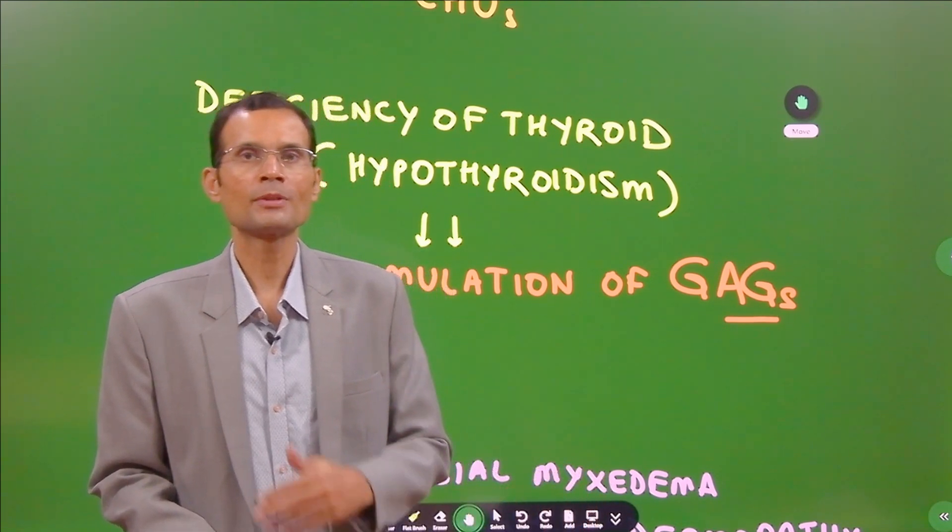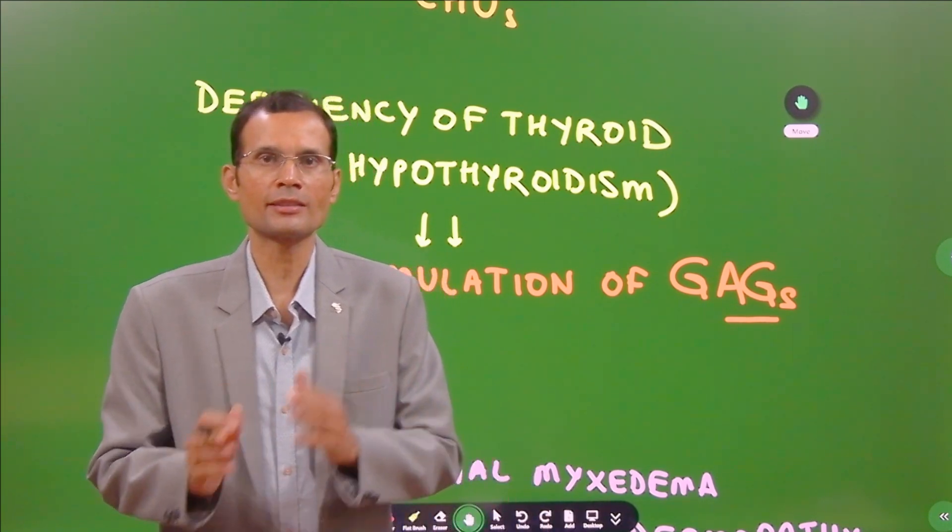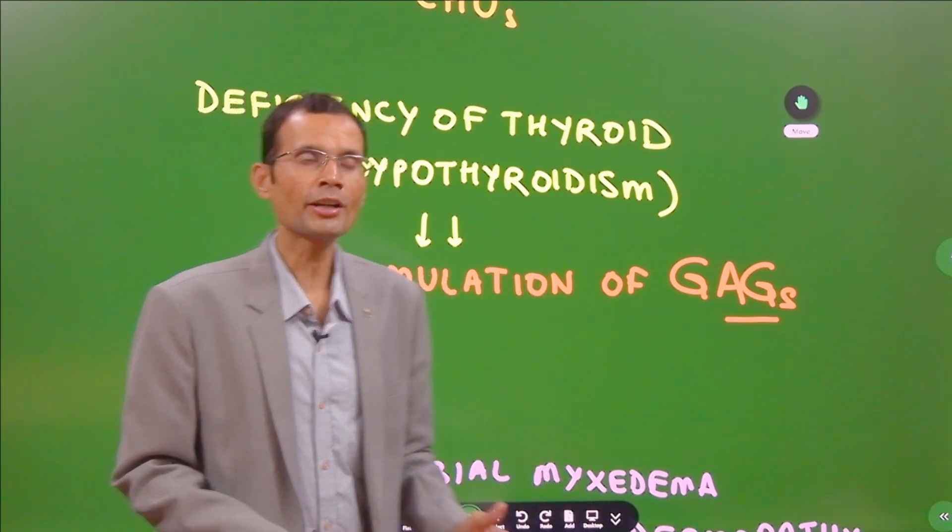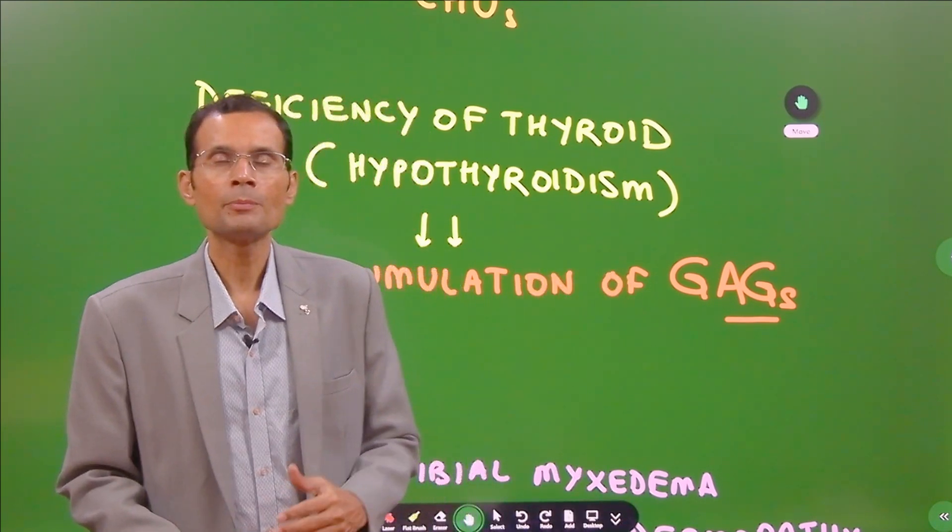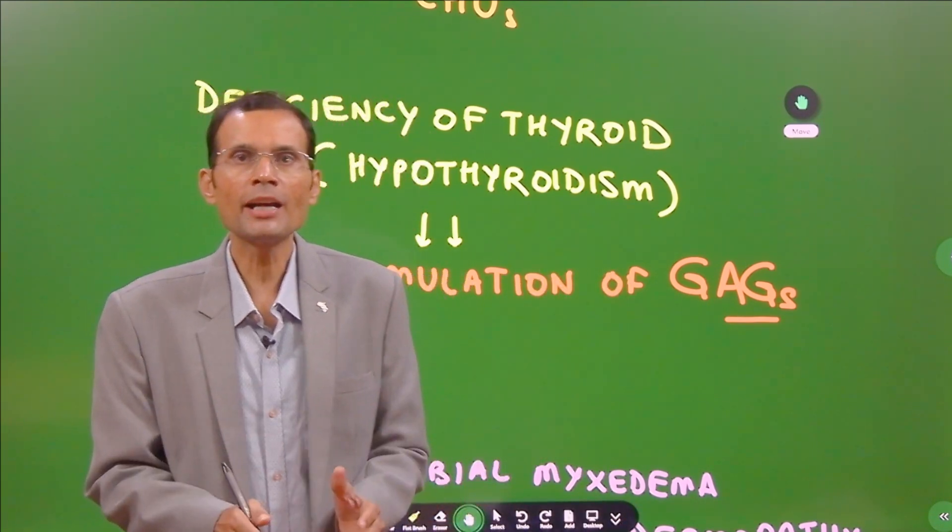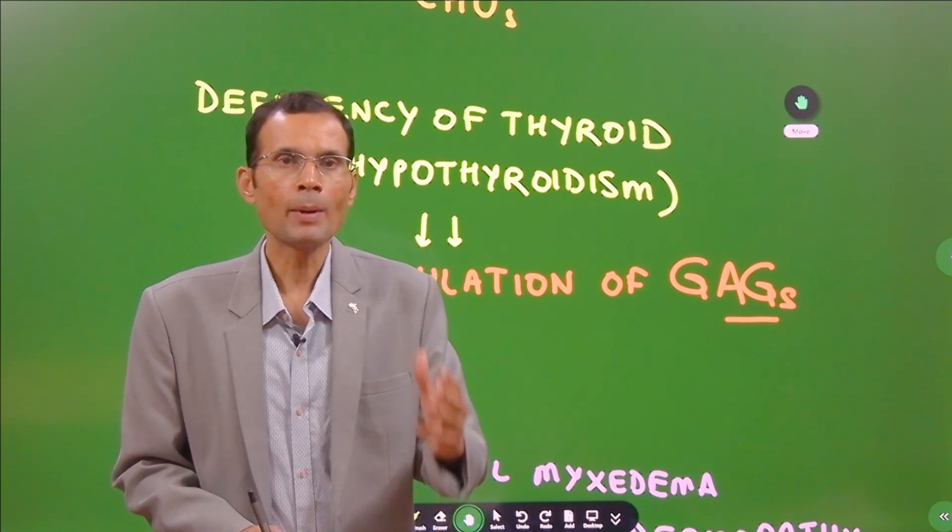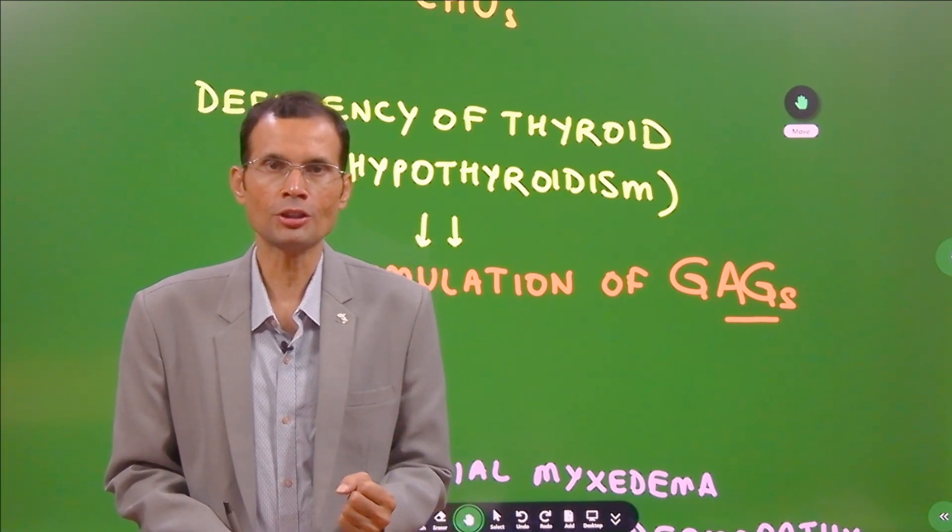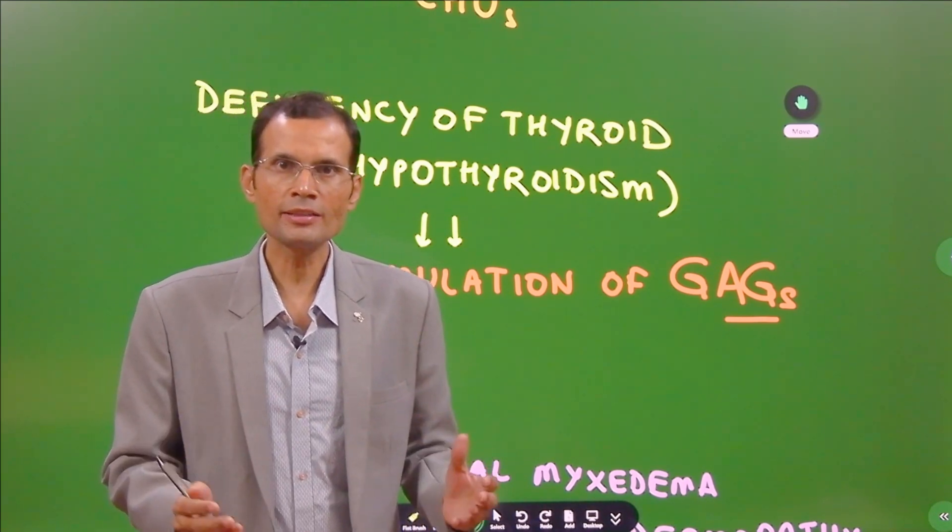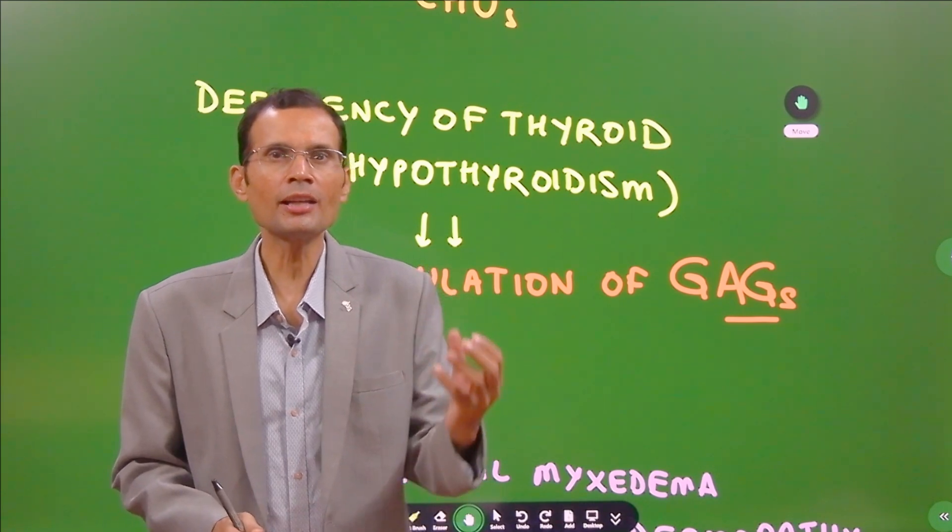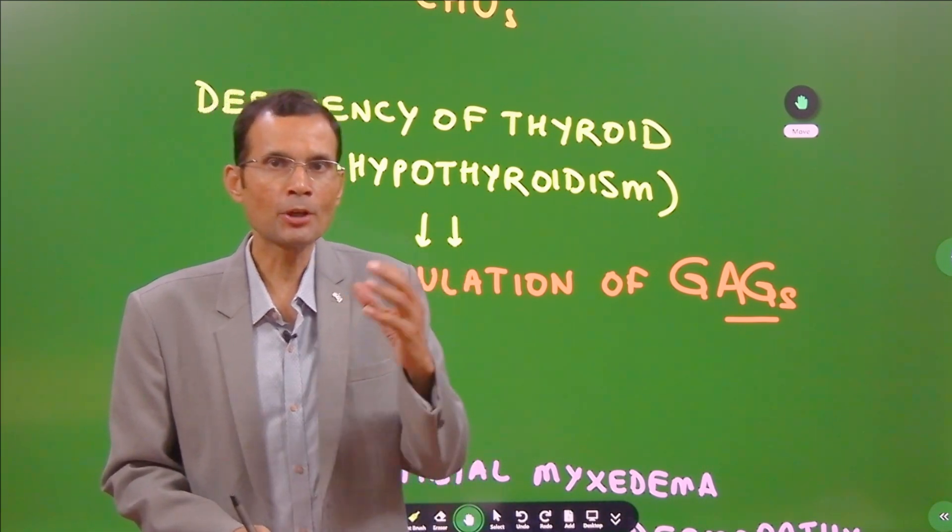Glycosaminoglycans. What are they? You must have heard of chondroitin sulfate and hyaluronic acid. These chondroitin sulfate and hyaluronic acid, or the GAGs, they accumulate in the subcutaneous tissue. By osmosis, they pull water. And this resultant edema is slightly gel-like.